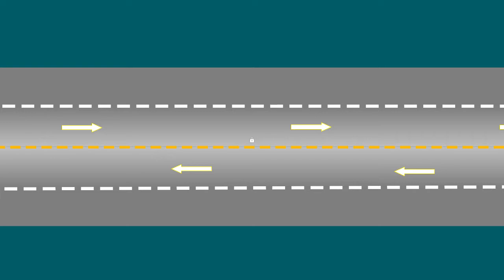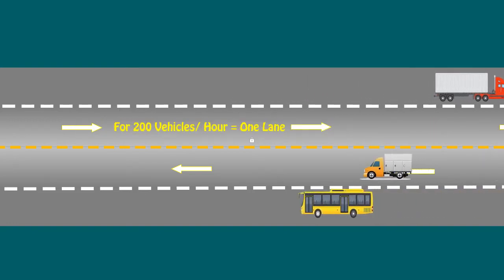In four laning, one lane is for heavy or slower vehicle movements and another lane is for light or faster vehicles. Similarly, the other two lanes are kept for opposite direction traffic.